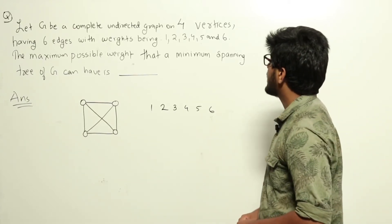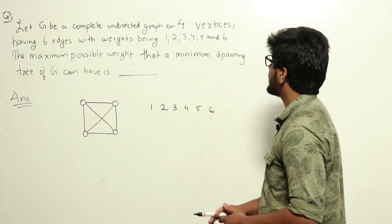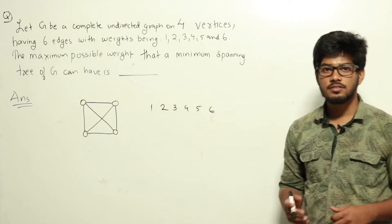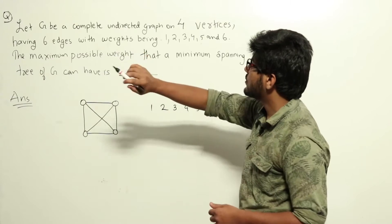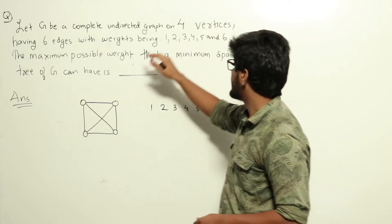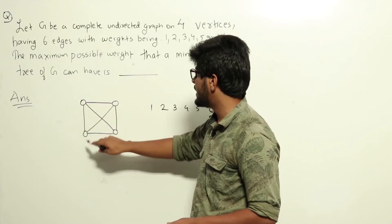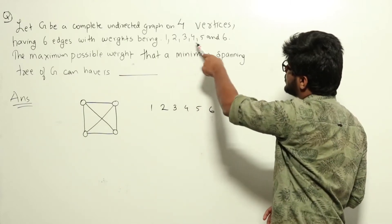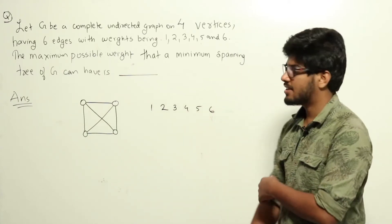Let G be a complete undirected graph on four vertices having six edges with weights 1, 2, 3, 4, 5, and 6. The maximum possible weight that a minimum spanning tree of G can have is — that's what we need to find out. This is a question from data structures regarding minimum spanning trees. The graph has four vertices and six edges, making it a complete graph.